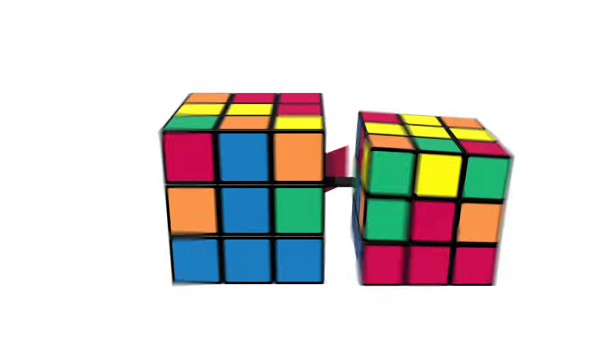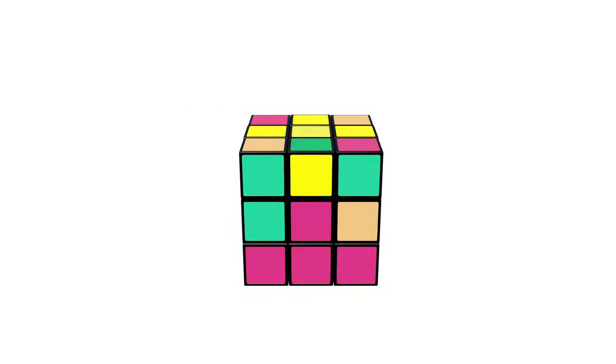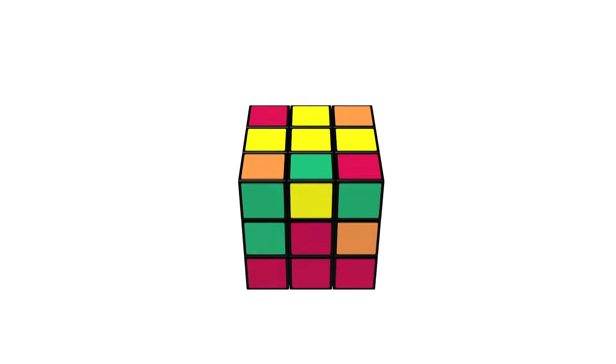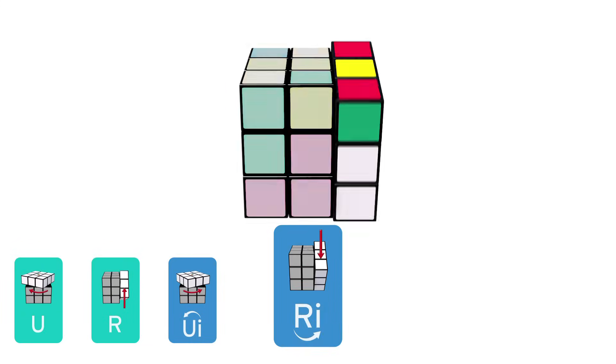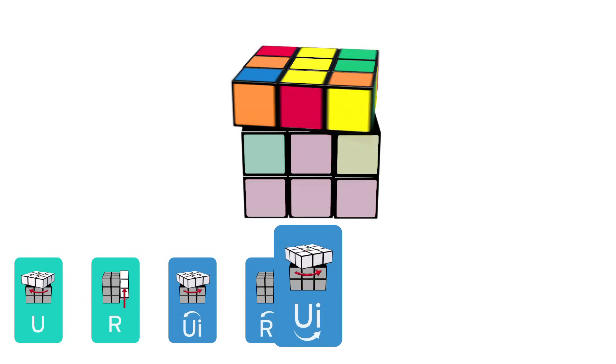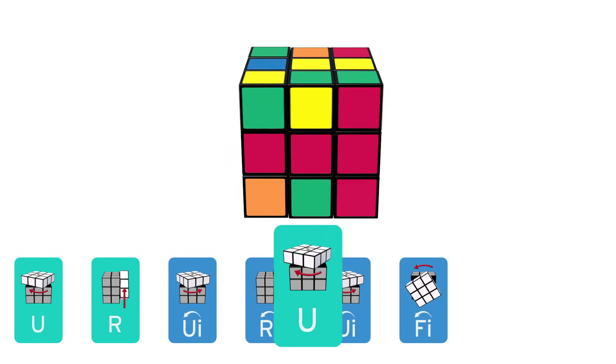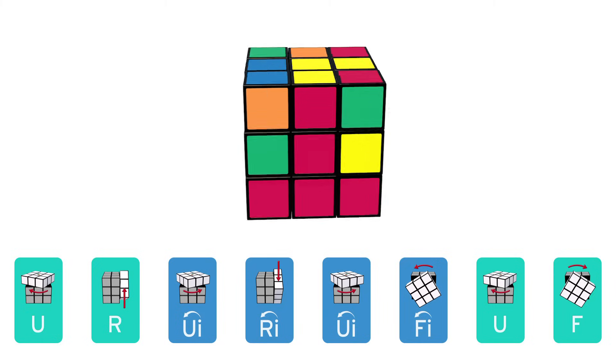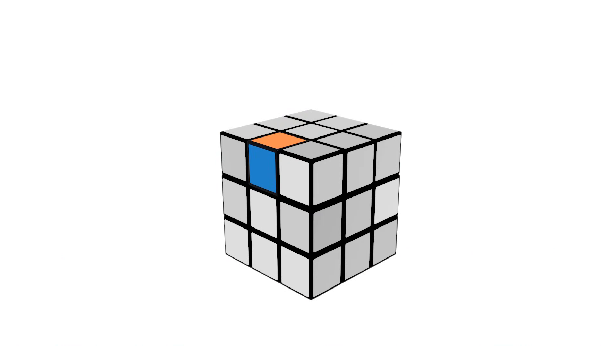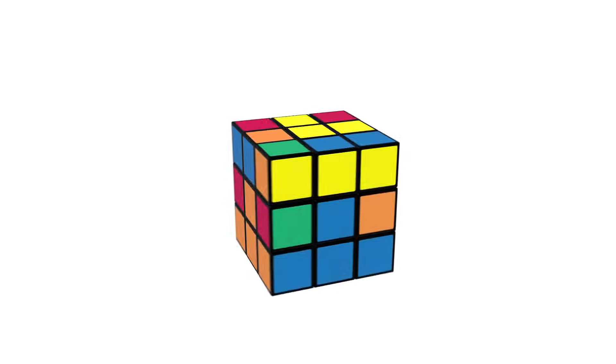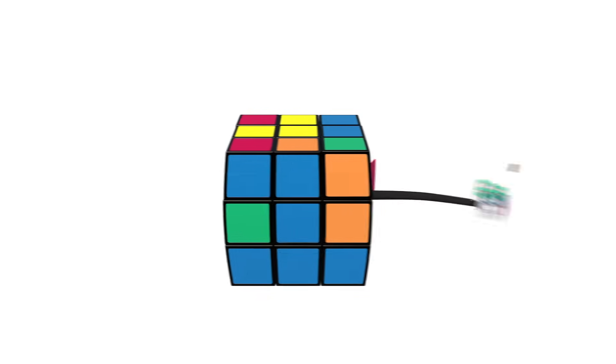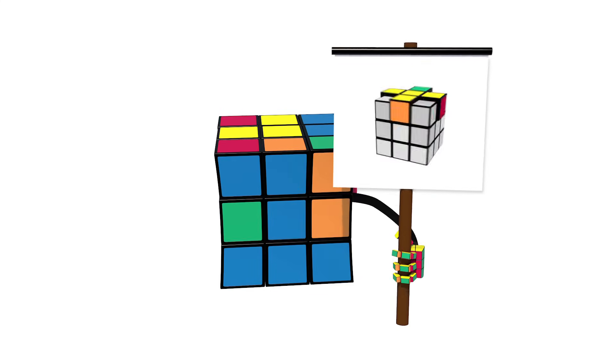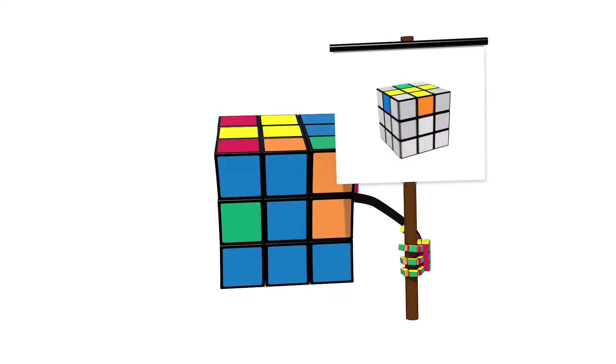If you find that all your edge pieces have yellow in them, then try this. Make sure the yellow center piece is on top. Up, right, up inverted, right inverted, up inverted, front inverted, up, front. That should now give you a center piece that does not contain yellow. Find that piece and create a vertical line like we mentioned a few moments ago. If you find at any point coming up that all the edge pieces have yellow in them, then come back to this point and repeat the routine you've just done.